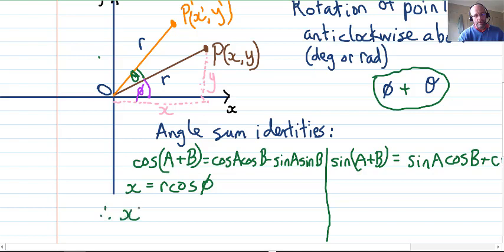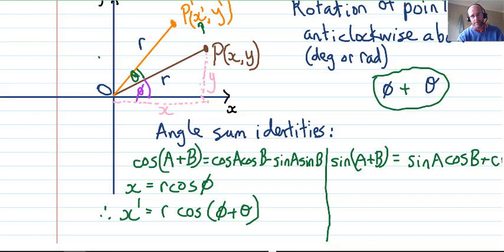Therefore for x', which is on the image here, we use the same idea. So it would be r cos(φ+θ). You can see where the angle sum identity kicks in. To get this x coordinate of the image, we use that identity, and r is distributed amongst all terms as a scalar value subject to distributivity.